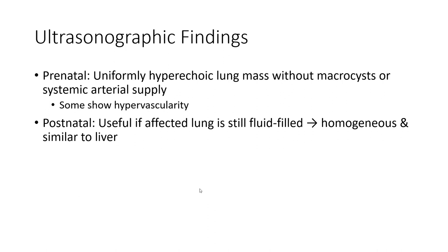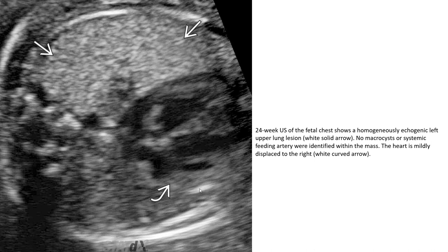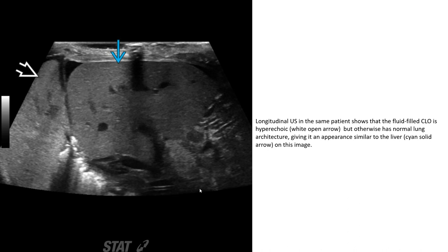Ultrasound findings: Prenatally, a uniformly hyperechoic lung mass without macrocysts or systemic arterial supply is seen. Postnatally, ultrasound is useful if the affected lung is still fluid-filled, appearing homogeneous and similar to the liver. A 24-week ultrasound of the fetal chest shows a homogeneously echogenic lung lesion with no macrocysts or systemic feeding artery identified. Longitudinal ultrasound shows a fluid-filled CLO that is hyperechoic but otherwise has normal lung architecture, giving it an appearance similar to the liver.